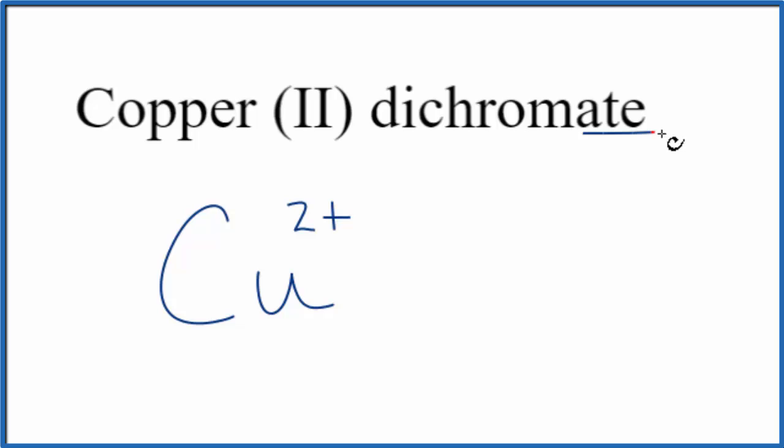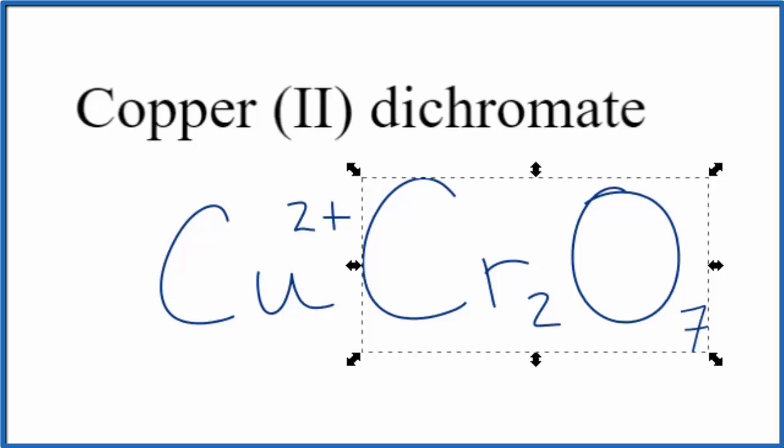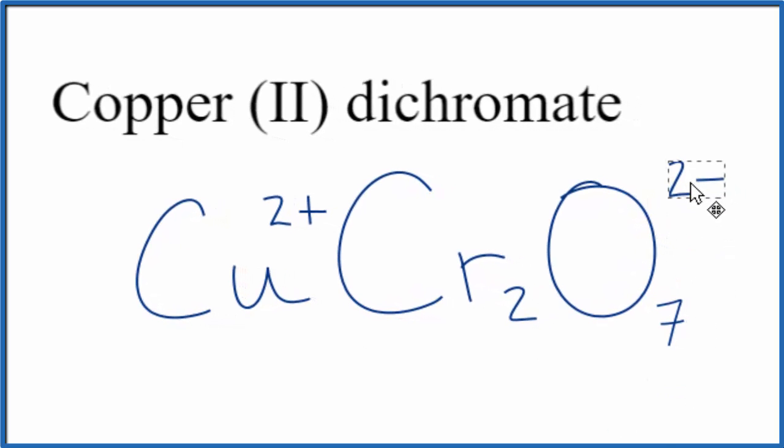For the dichromate, ate - you're not going to find something with ate on the periodic table. So you've either memorized that the dichromate ion is Cr2O7 and it has a charge of 2-, or you're allowed to look that up on a table of polyatomic ions.